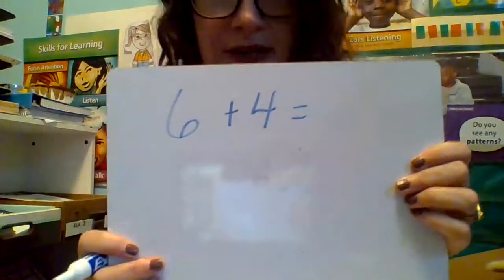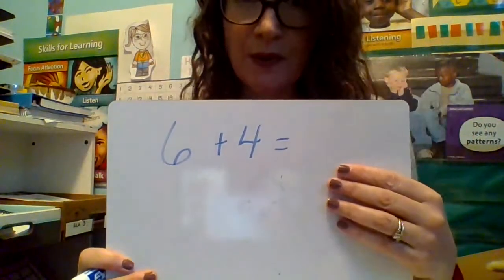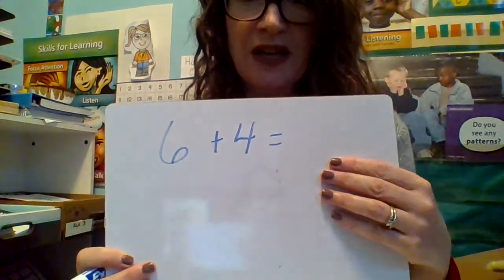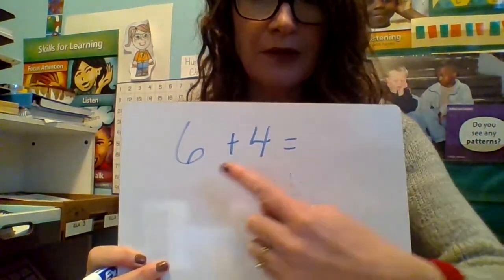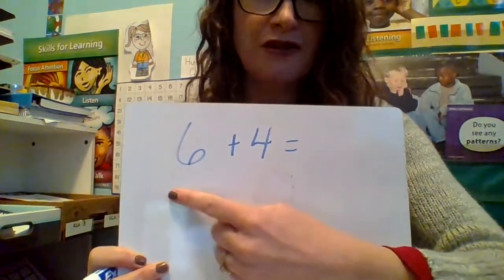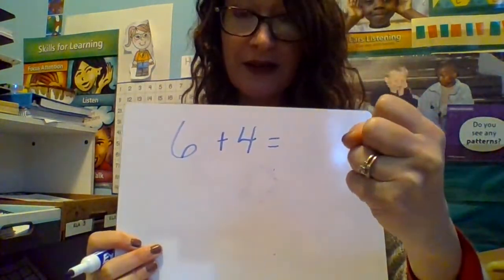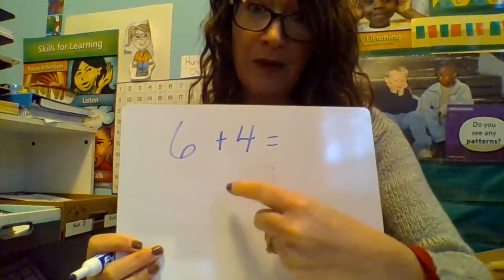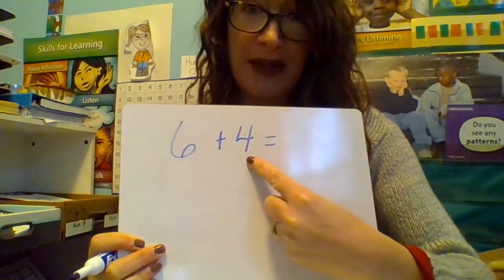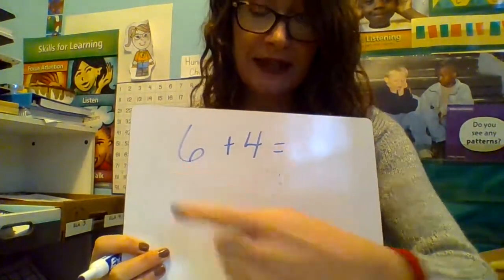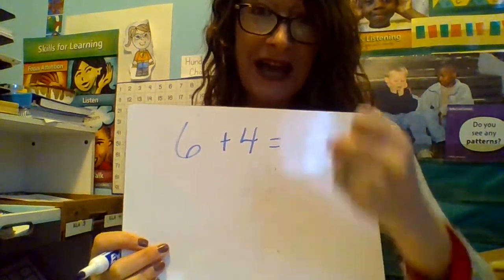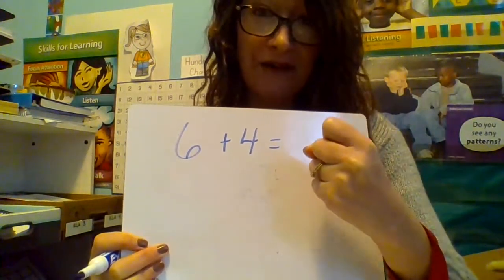I'm going to show you an example of this. We learned that 6 plus 4 equals — to use the counting on strategy, we would grab the larger number, and the larger number in this case is 6. So everybody go 6, and then we count on this many. So let's grab 6, and then we're going to count out 4 more.